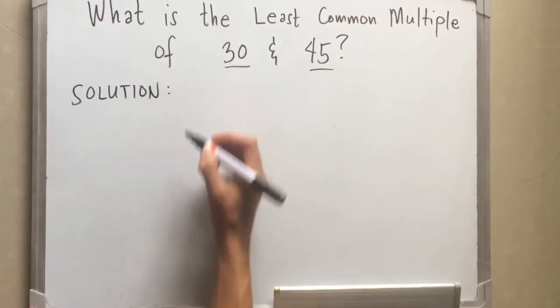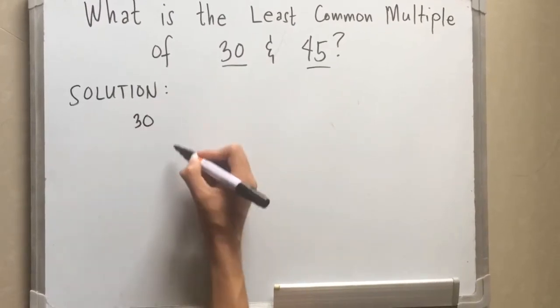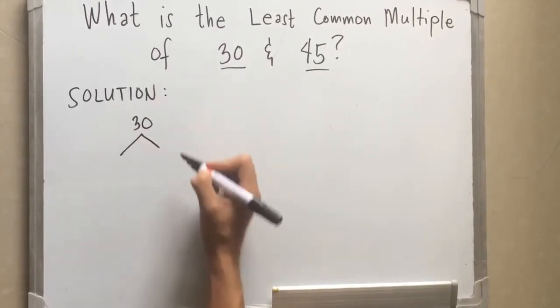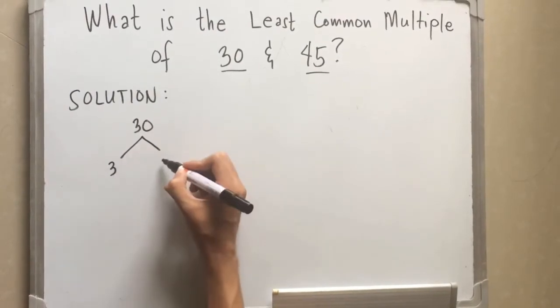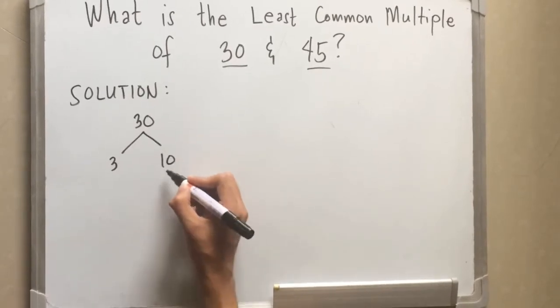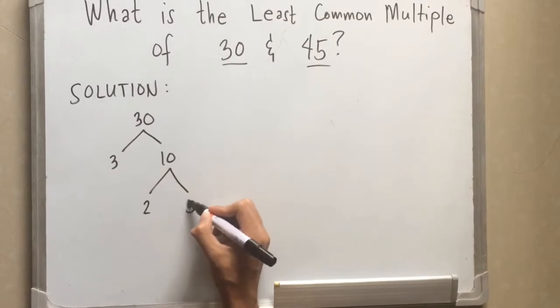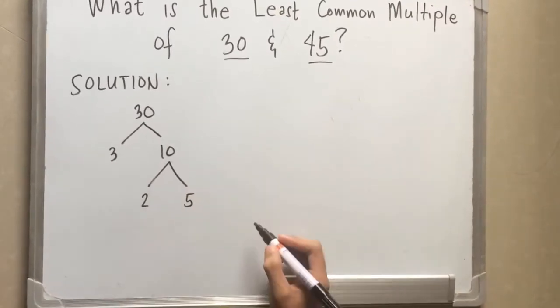First we are going to deal with number 30 by getting its factors and we have 3 and 10. 10 times 3 is equal to 30 and we can still get the factors for number 10. We have 2 and 5. 2 times 5 is equal to 10.